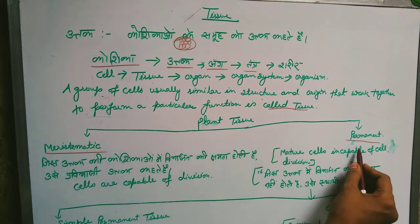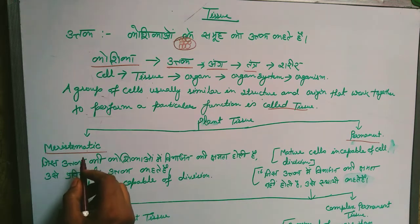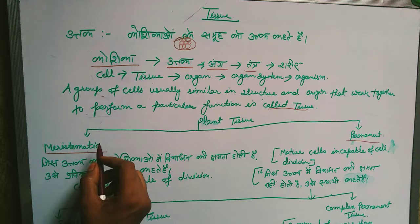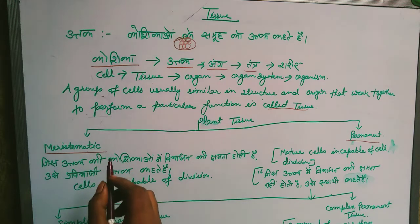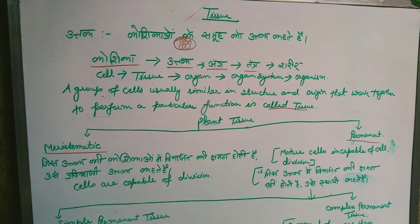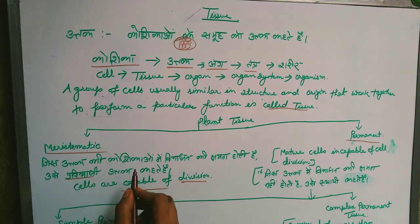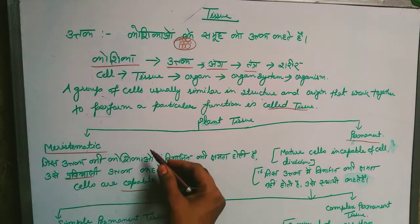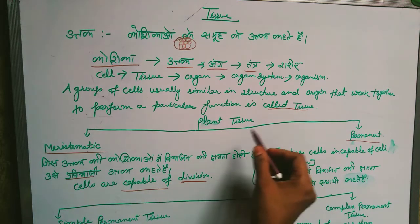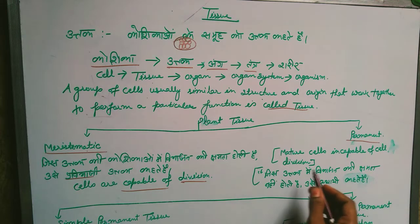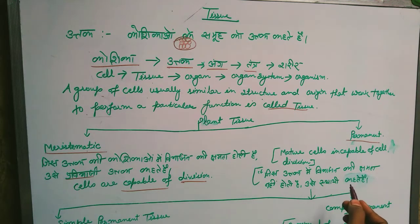Meristematic Tissues are those plant tissues that can grow and divide by themselves — that is why they are called Meristematic. These cells are capable of cell division, whereas mature cells in permanent tissue are not capable of cell division.